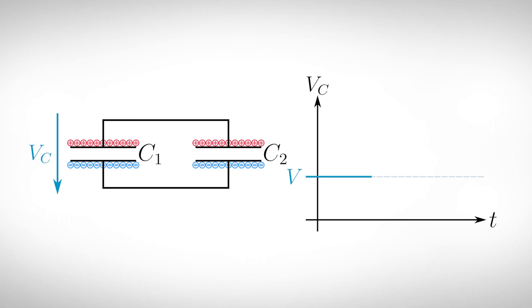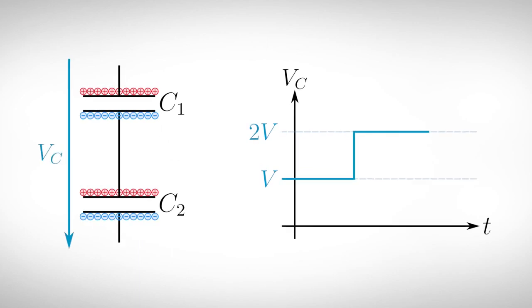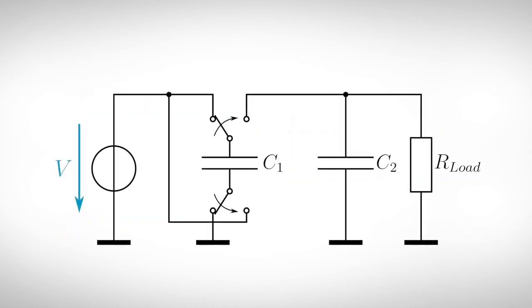Another idea is to fully charge two capacitors with the same capacitance in parallel. And in the next step connect them in series. The voltage over the two capacitors is now twice the voltage before. Again, we can use two alternating switches to get this voltage doubled.